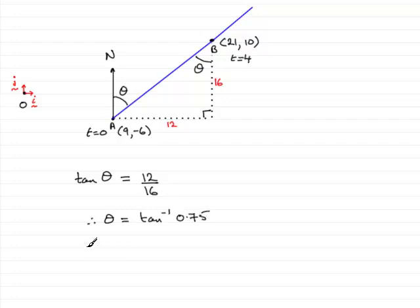And if you do that on a calculator, what you end up with is 36.869 and so on. And that's in degrees. So what is the bearing going to be?